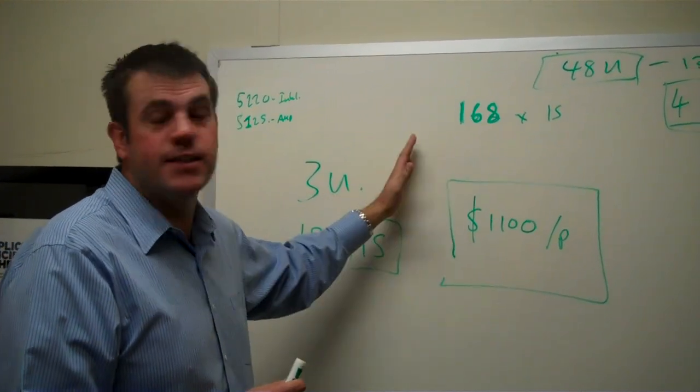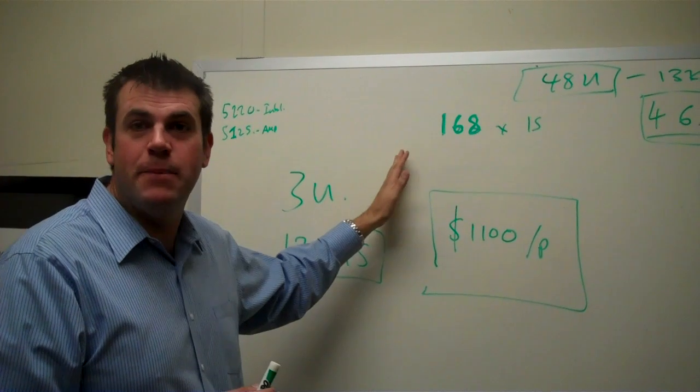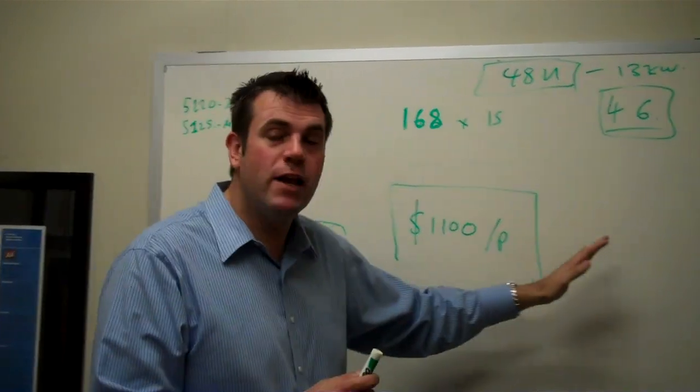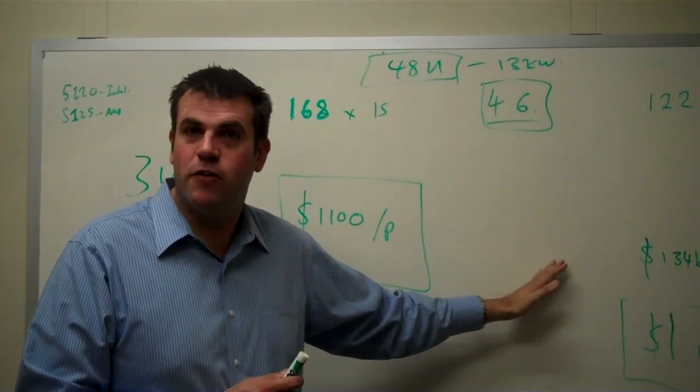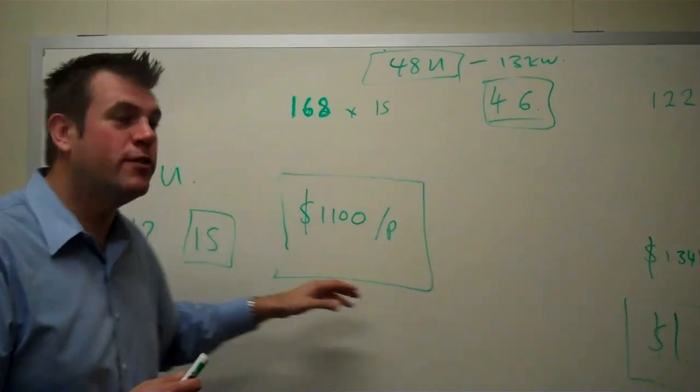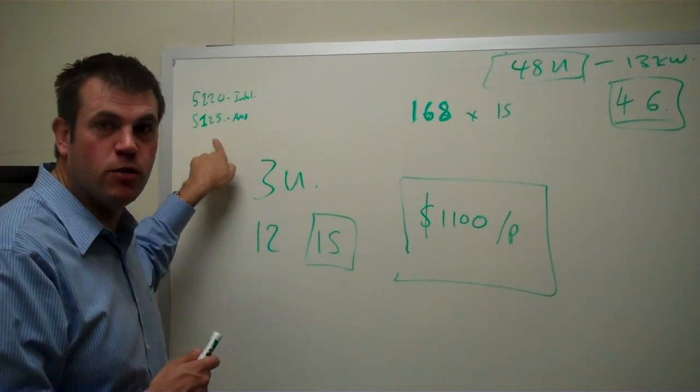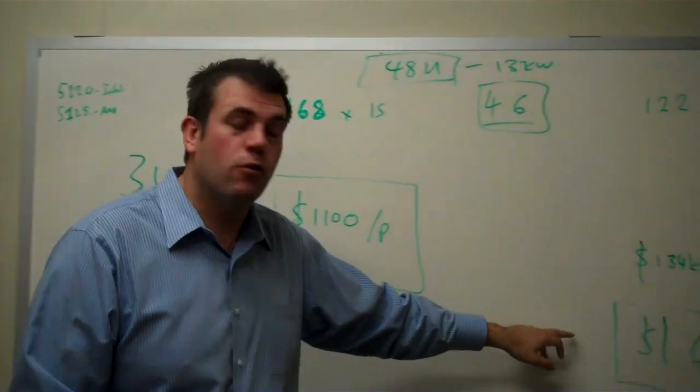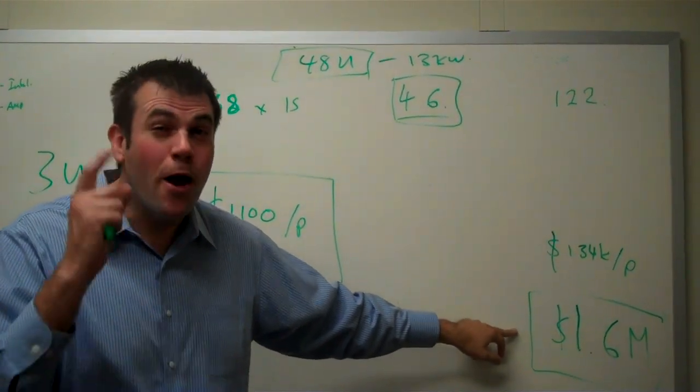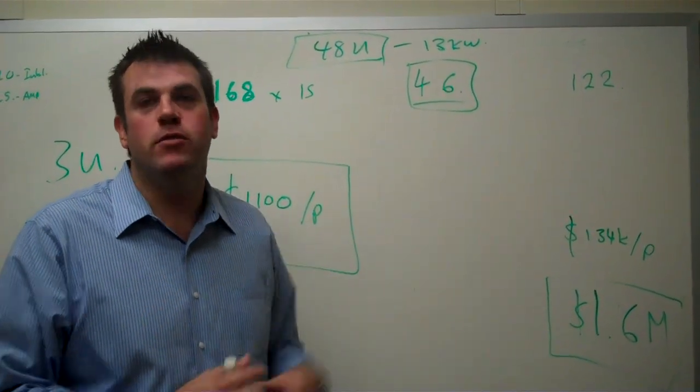So if you're selling to these accounts, talk about their business problems. They're really looking at revenue per square foot of data center space. You go and sell the 5220 or the 5125, you can tell them roughly they're going to make $1.6 million more per rack by going with Dell.